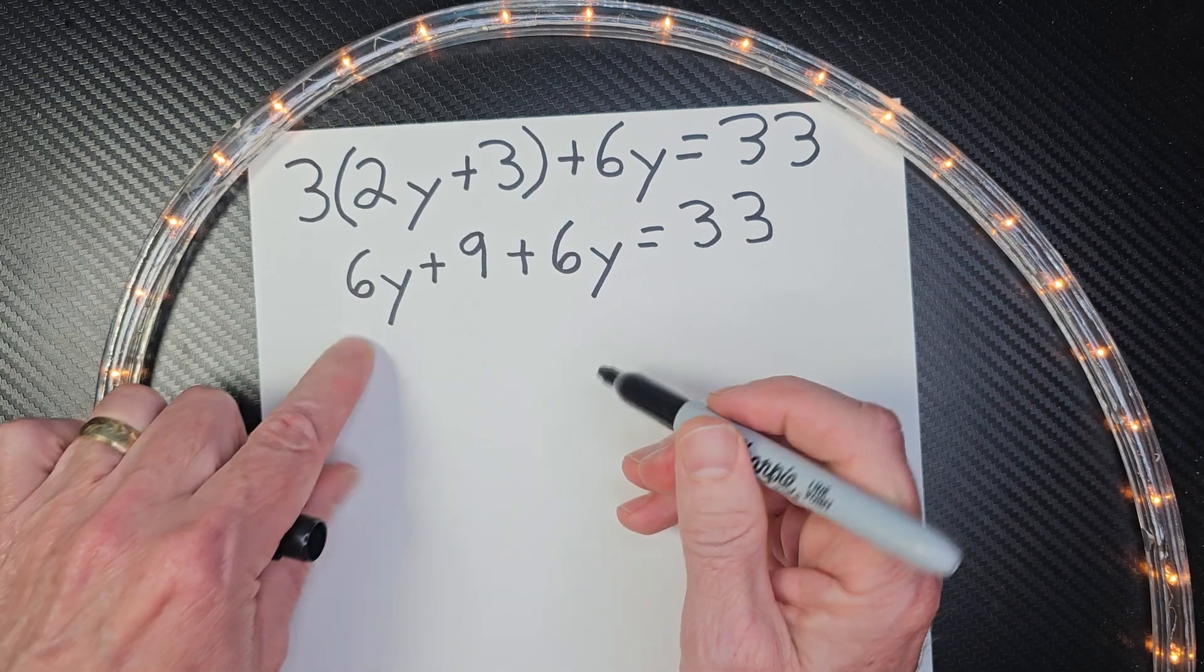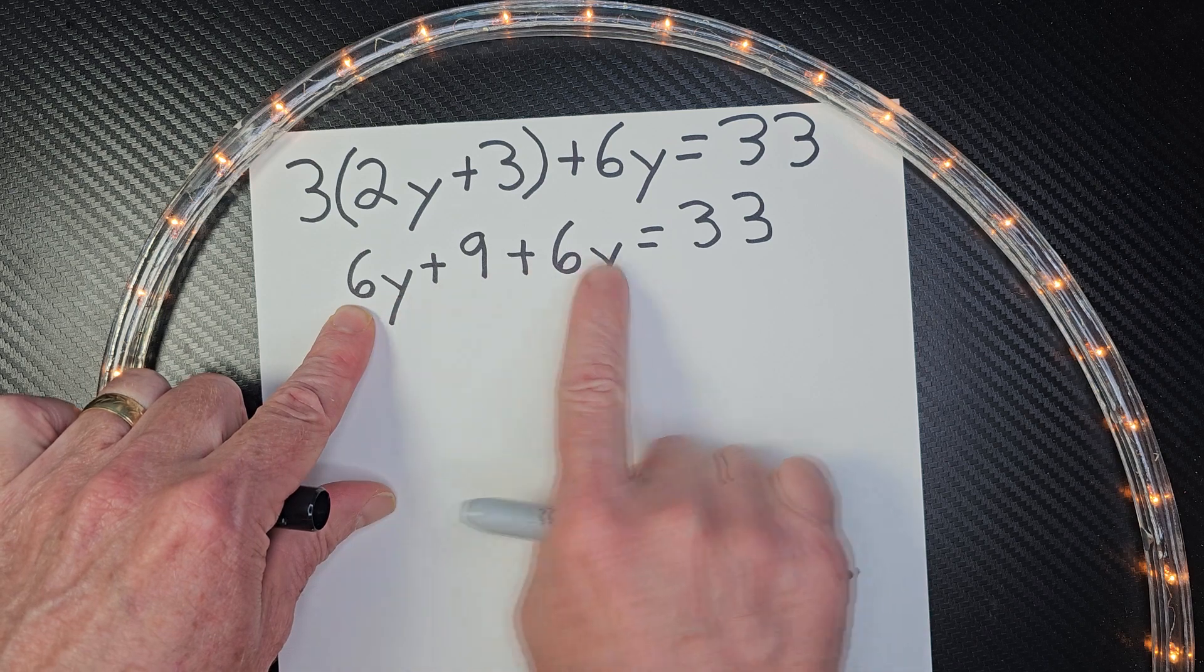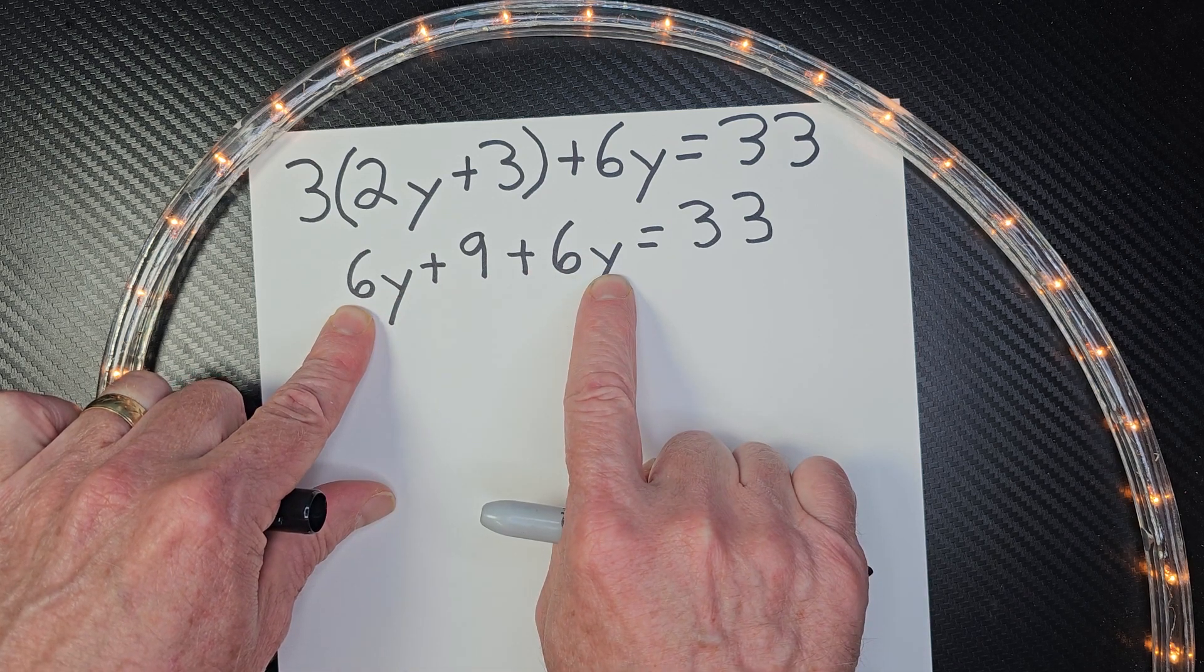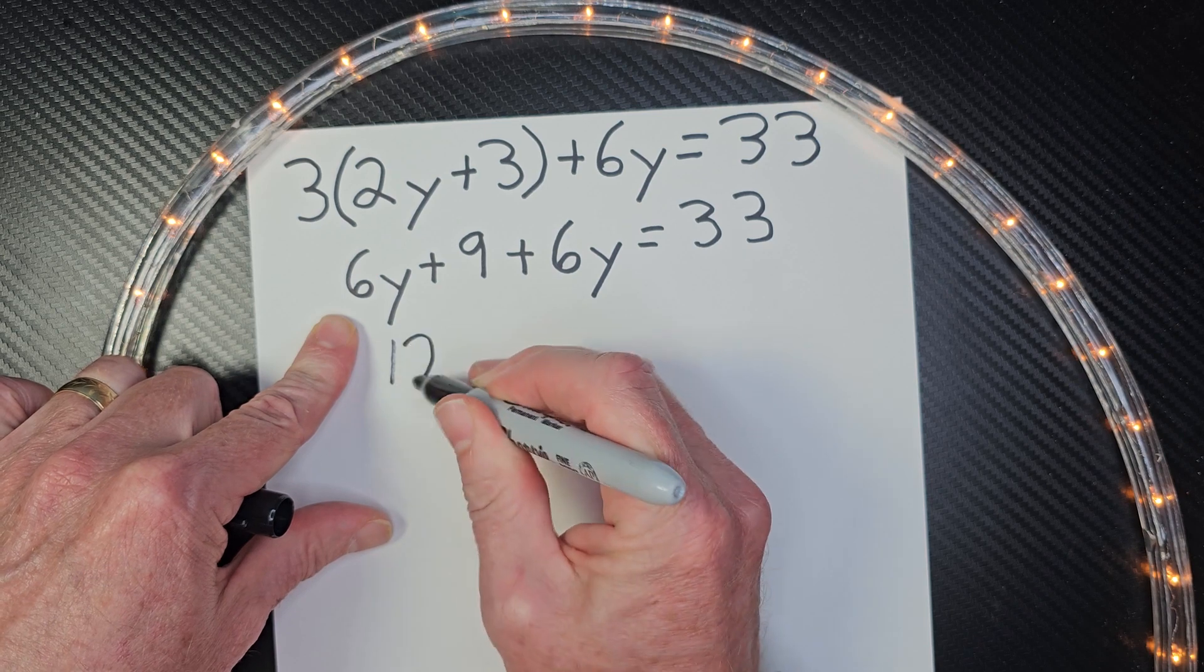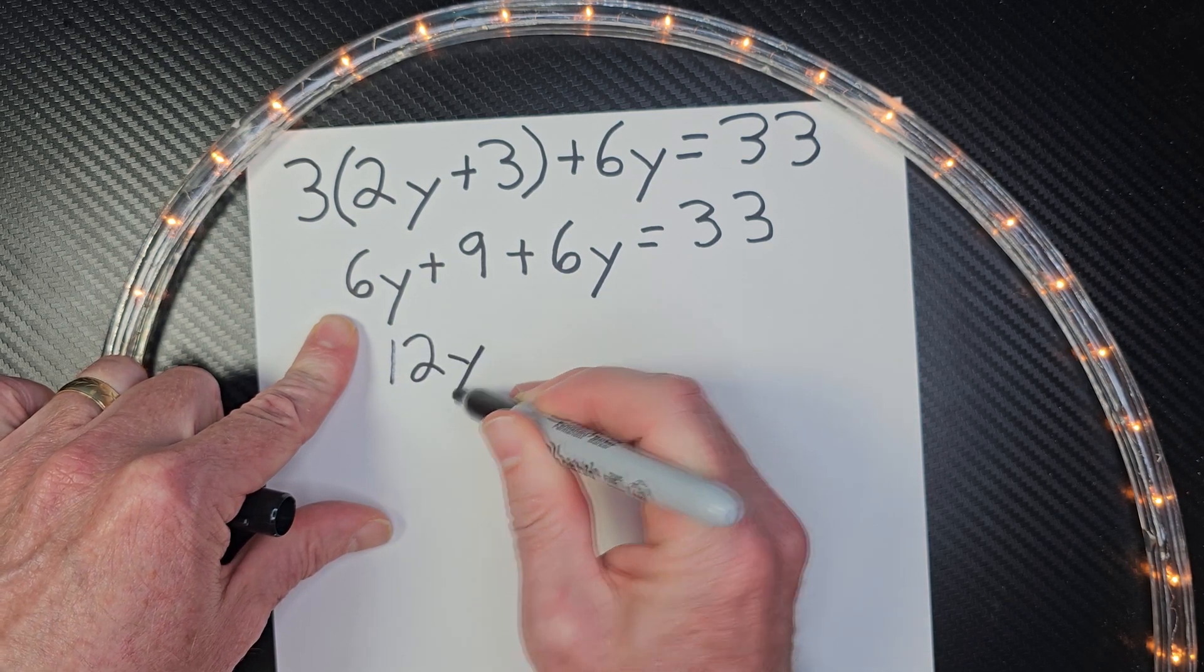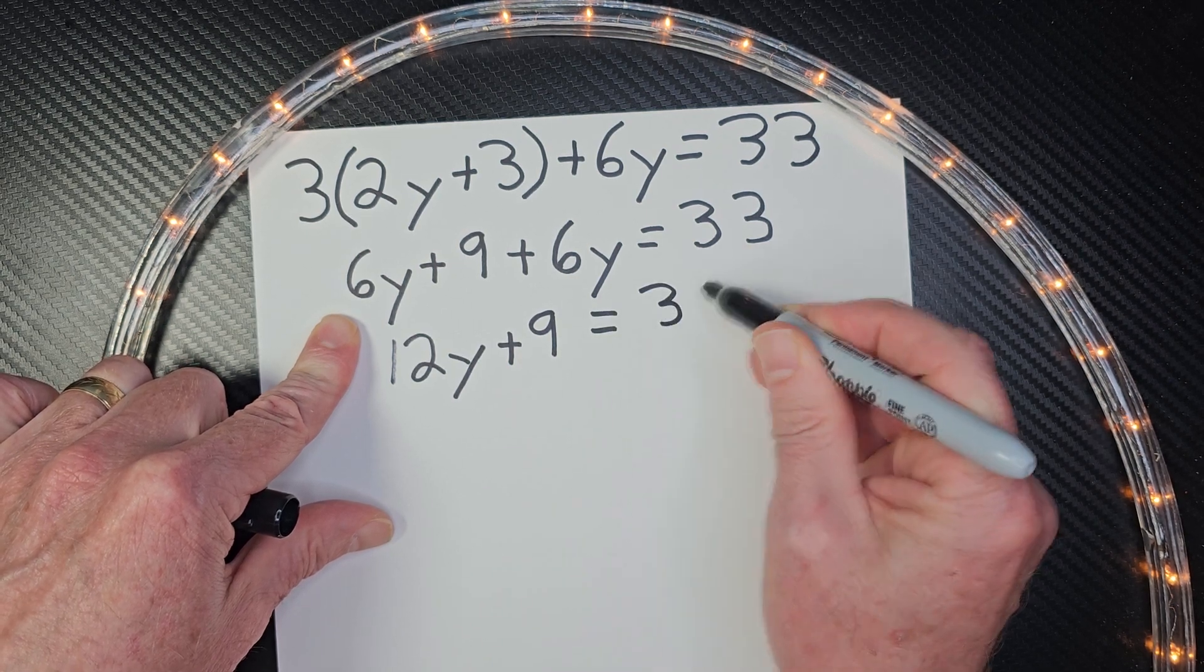All right, so now I see that I have like terms here. So I have 6Y plus 6Y, which would equal 12Y. So I'm going to go ahead and put 12Y here plus 9 equals 33.